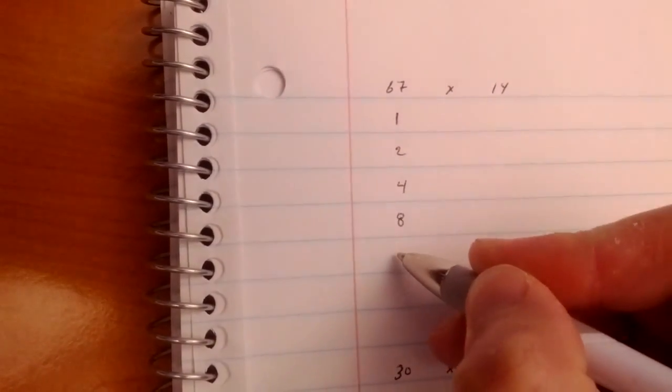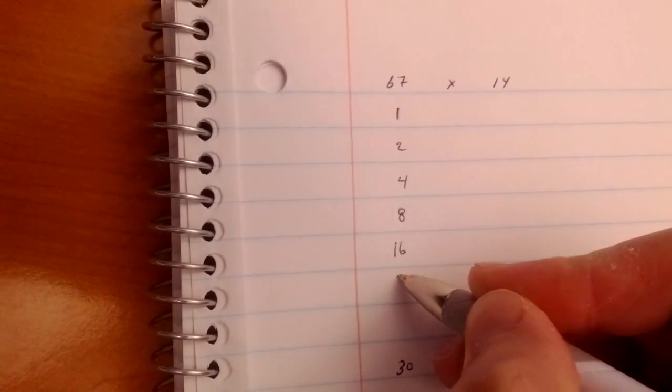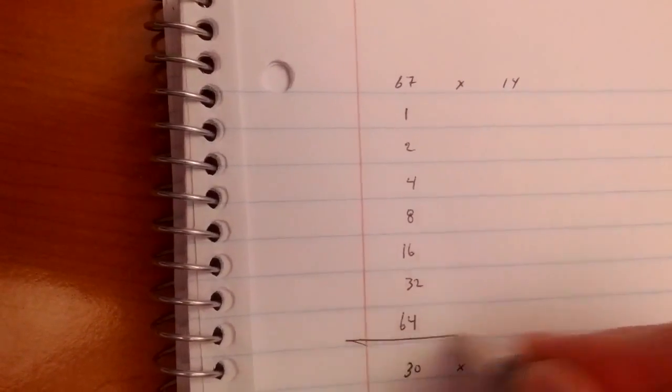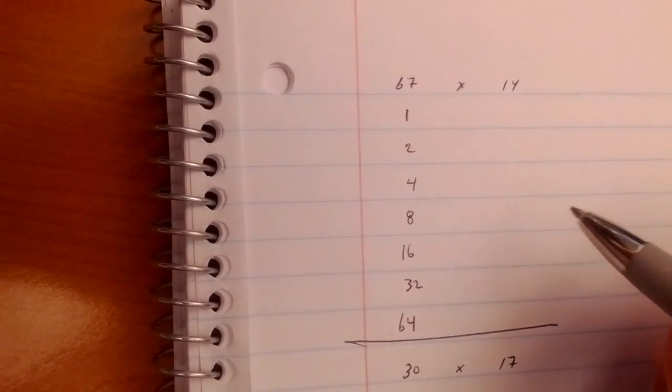All right, so first math problem: 67 times 14. The way that you would do this with the Egyptian method, you start and you do powers of 2: 1, 2, 4, 8, 16, 32, 64. I'm going to stop there.